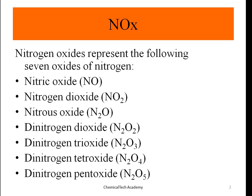We have nitrogen oxides in different forms. NOx represents the following seven oxides of nitrogen: nitric oxide (NO), nitrogen dioxide (NO2), nitrous oxide (N2O), nitrogen dioxide N2O2, N2O3, nitrogen tetra oxide N2O4, and nitrogen pentoxide N2O5.